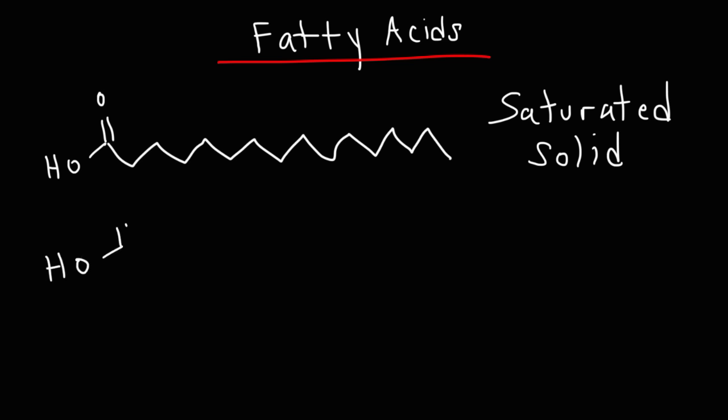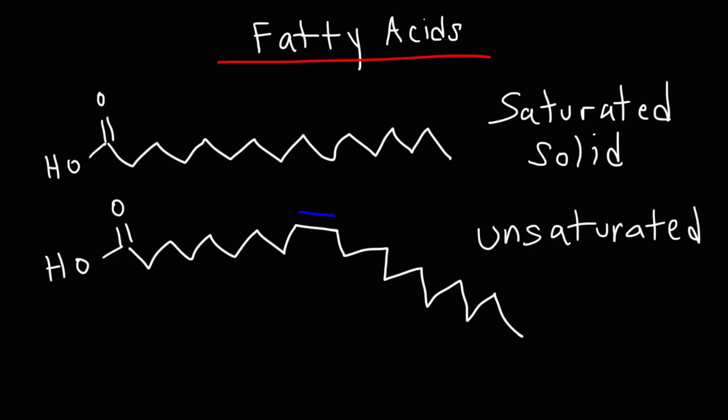An unsaturated fatty acid has a double bond. So it looks something like this. Because of the presence of the double bond, there's a kink in the structure. This molecule, it bends. So that's an example of an unsaturated fatty acid. For every double bond present, you lose two hydrogen atoms. Unsaturated fatty acids tend to be liquid at room temperature. So these would include the vegetable oils.